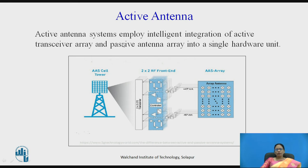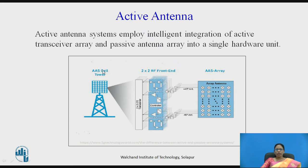An active antenna system employs intelligent integration of an active transceiver array and a passive antenna array into a single hardware unit. As shown in the diagram, the passive antenna array and the active transceiver array are integrated into a single hardware to form the active antenna, transmitting and receiving from an AAS cell.